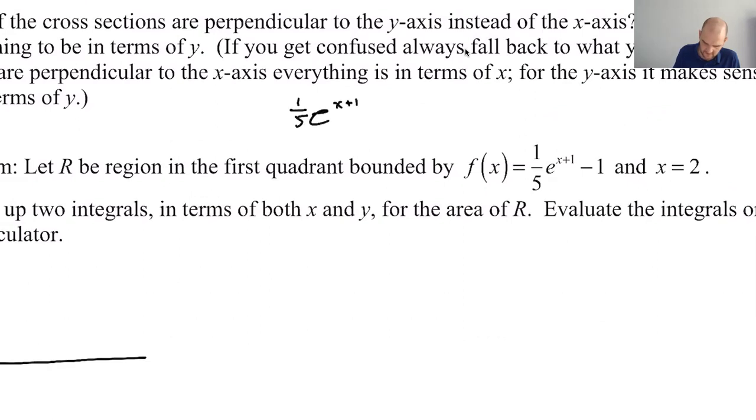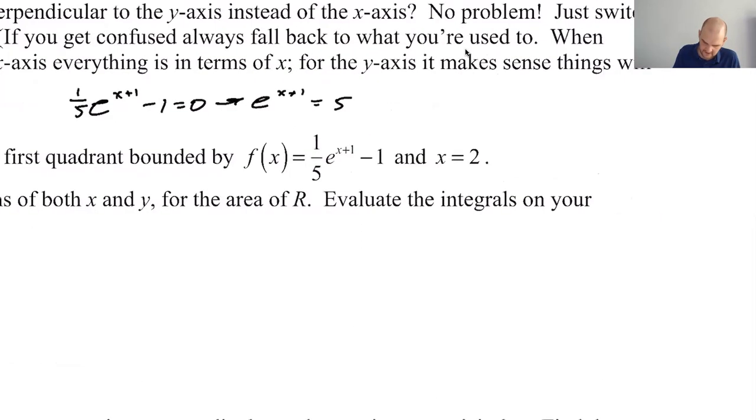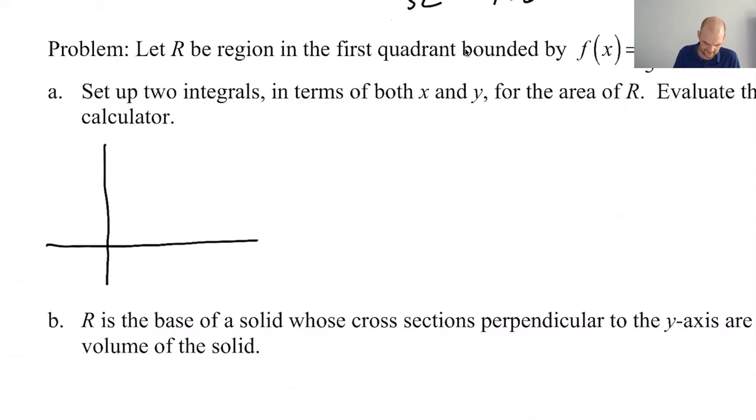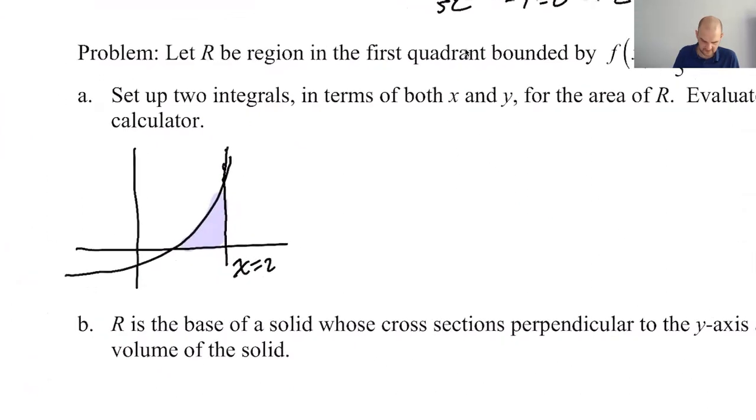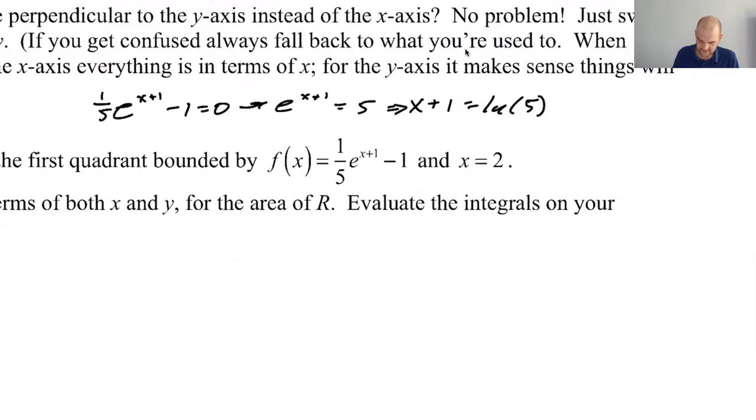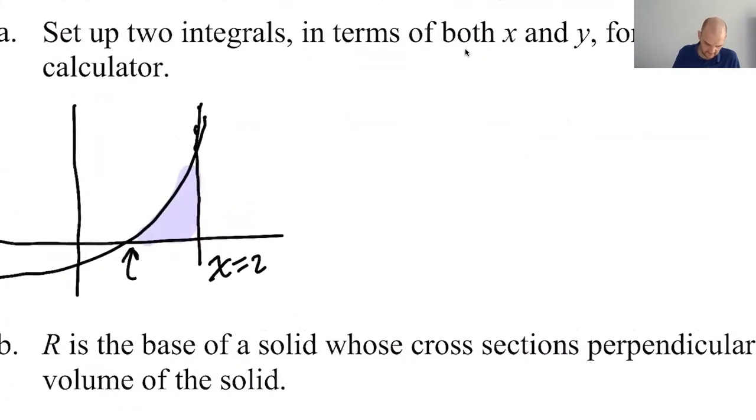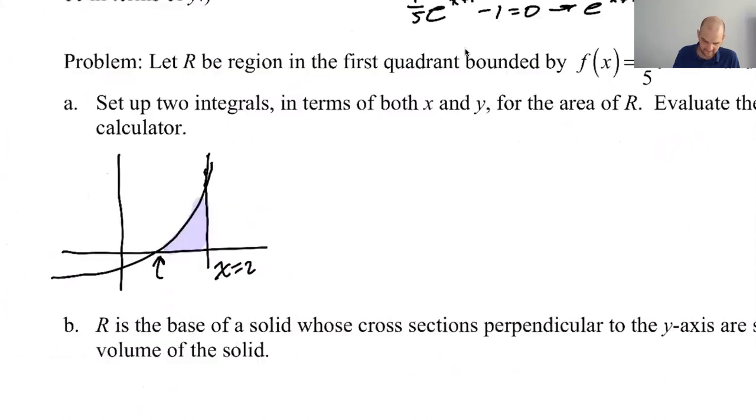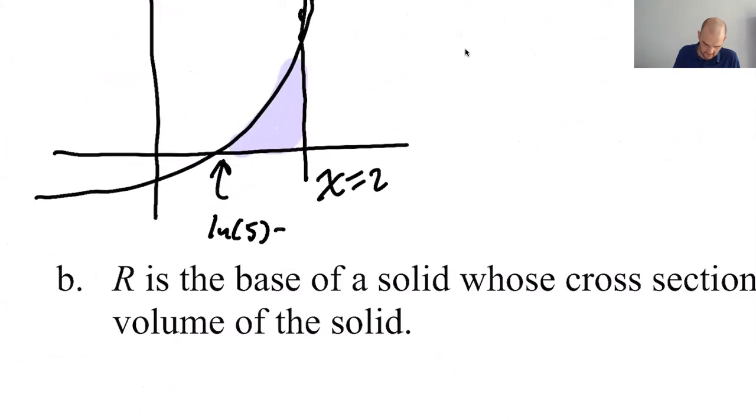F of x equals 0. 1/5 e to the x plus 1 minus 1 equals 0. E to the x plus 1 equals 5. x plus 1 equals the natural log of 5. Natural log of 5 minus 1. Sweet. I'm going to go with this. And then 2. So I think our region is this little region here. I think that's what we're dealing with. And then, apparently, this value right here is natural log of 5 minus 1. This is ridiculous.